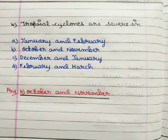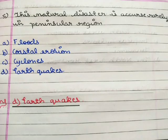Next question: tropical cyclones are severe in option A January and February, option B October and November, option C December and January, option D February and March. The correct answer is option B October and November.